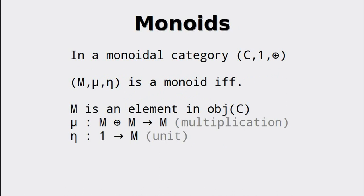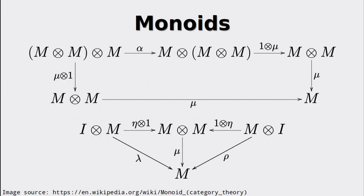Speaking of monads, let's start our discussion on them by looking at monoids. When talking about categories, we already talked about monoids and how they can be interpreted as a category. Now we want to take a look at the formal definition of monoids. Suppose we have a monoidal category; then an object in C that we call M, together with two transformations mu and eta, form a monoid if mu transforms the application of the tensor product to M twice to M itself, and eta transforms the identity element to M. Mu is called the multiplication and eta is called the unit. In this commutative diagram we see that the tensor product still has to be associative via alpha. Mu allows us to reduce every path in these graphs in order to retrieve a single M.